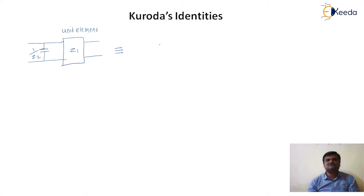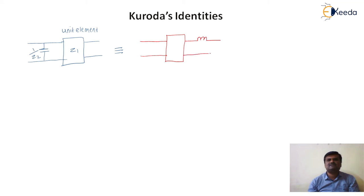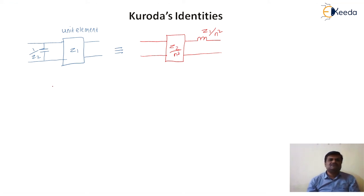Now we convert shunt to series step. Here we draw the unit element first, then after that the capacitor is converted into an inductor. So first is Z2, then Z1. For the inductor you write Z1 bar n-squared, divided by n-squared. If an inductor is there, you also divide the unit element impedance Z2 by n-squared.